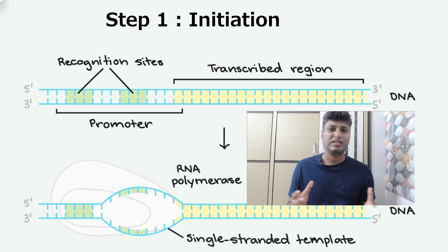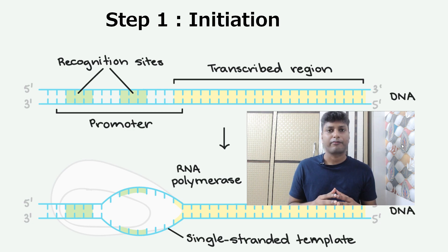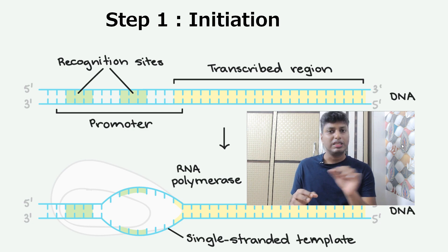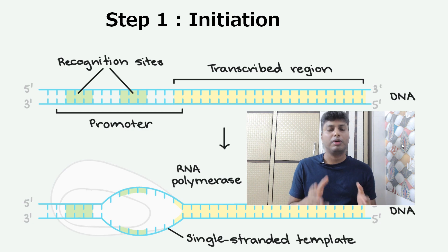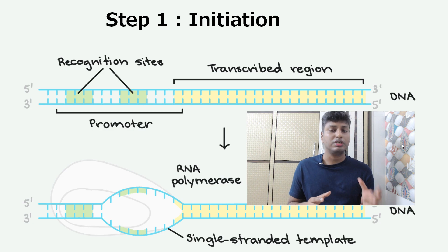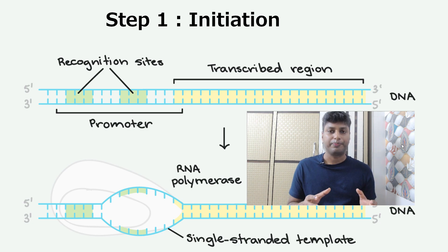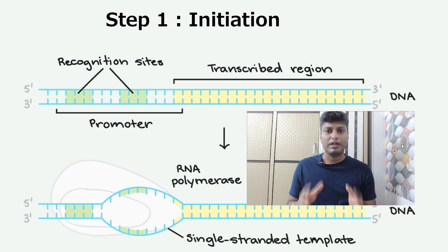What does this enzyme do? RNA polymerase helps in the formation of RNA from the DNA. Since DNA is two-stranded, there will be formation of a single-stranded RNA on the DNA strand itself. RNA polymerase has to locate a particular site on the DNA, and this particular site is called the promoter site. The promoter site helps the RNA polymerase to recognize the DNA, and once it binds to the promoter site, it knows that from this point the process of transcription has to start.